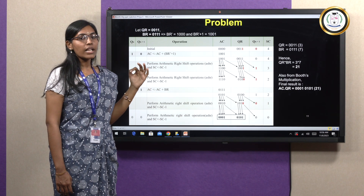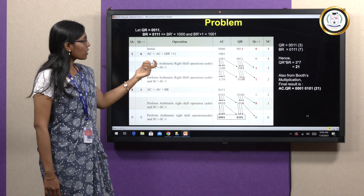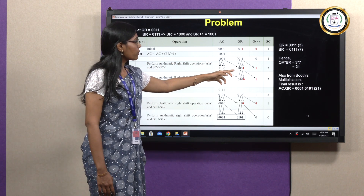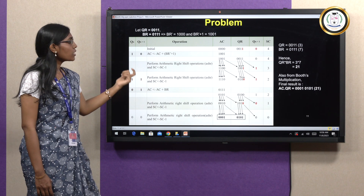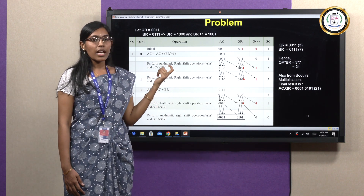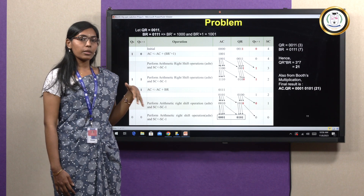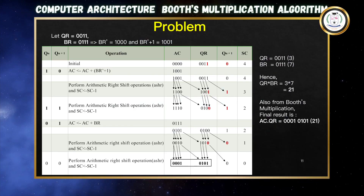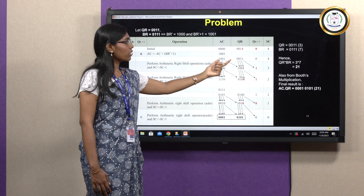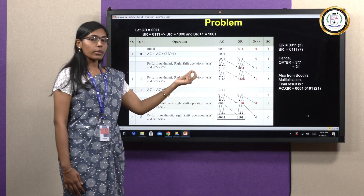Step 2: Check the last bit of QR and QN+1 — both are 1 (i.e., QN=1, QN+1=1). Since it is 1,1 no arithmetic operation is needed. Perform arithmetic shift right directly, then decrement SC from 3 to 2.